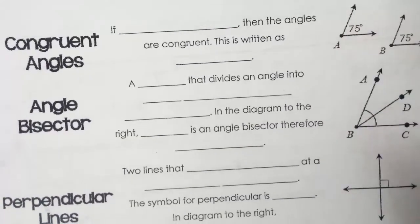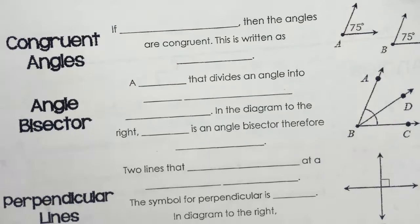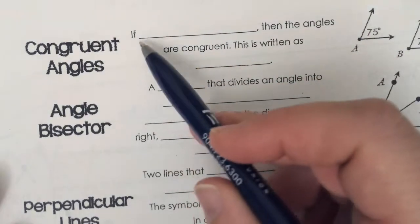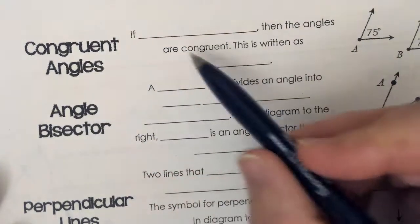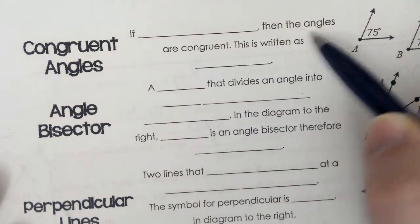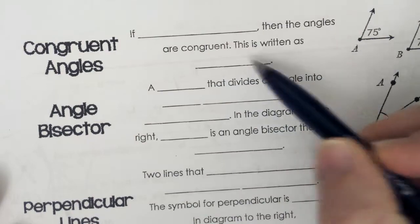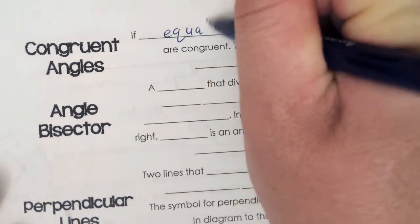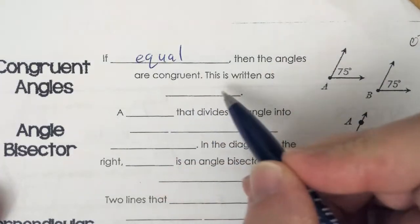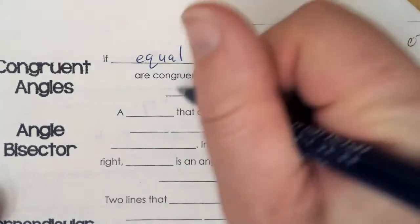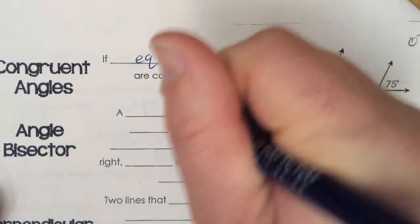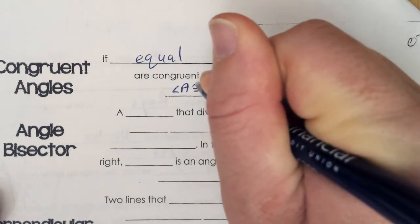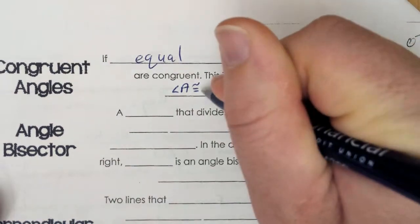We're on the back now, still taking notes, still working on vocabulary words. Congruent angles — if the measures are equal, then the angles are congruent. This is written as angle A congruent to angle B, using an equals sign with a squiggly sign above it.